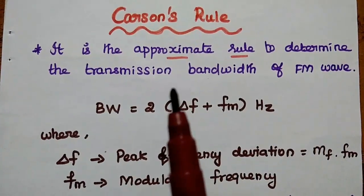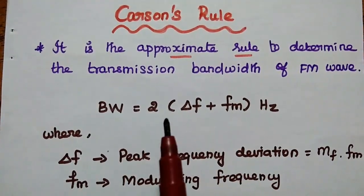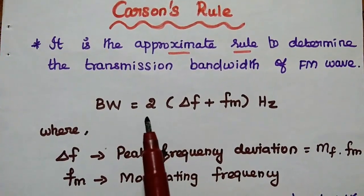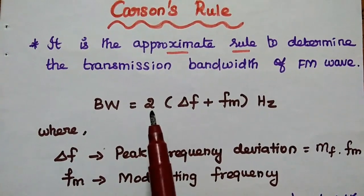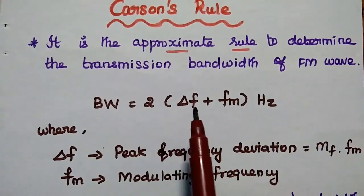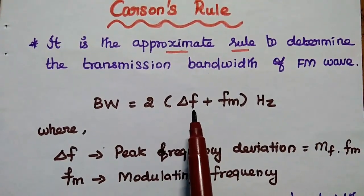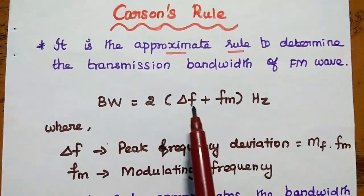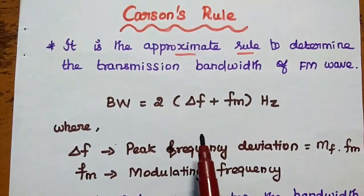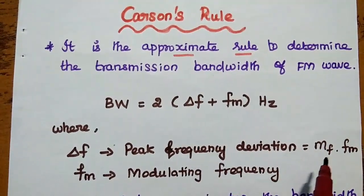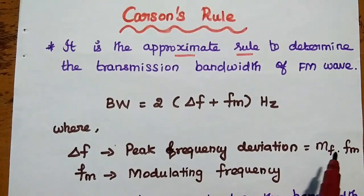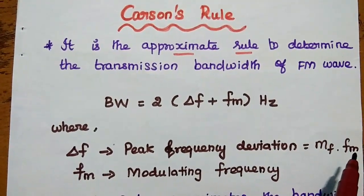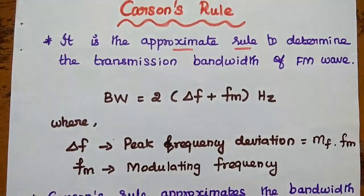Carson's Rule is the approximate rule to determine the transmission bandwidth of the frequency modulated wave. It states that bandwidth is equal to twice the sum of the maximum frequency deviation and the modulating frequency. Here, Δf is the peak frequency deviation, which can be represented as the product of modulation index and the frequency of the modulating signal. fm is the modulating frequency.